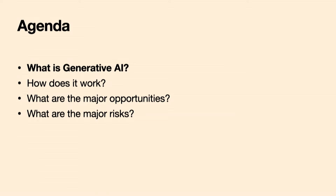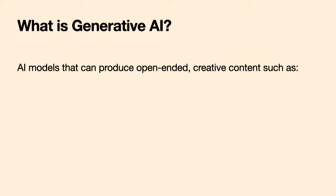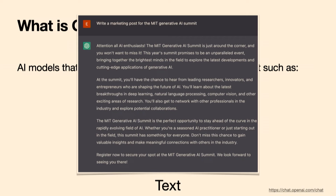What do we mean by generative AI? My definition is AI models that can produce open-ended and creative content. Typically when we think of AI, we think about things like prediction — giving you a yes or no, like whether a review is positive or negative, or a very constrained set of outputs. With generative AI, we're thinking about things that are open-ended and fundamentally creative.